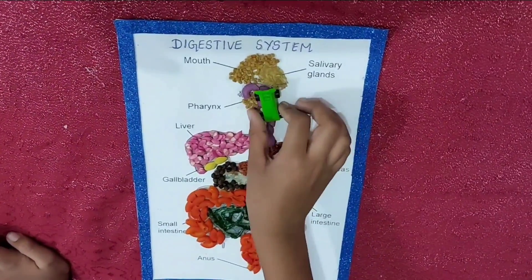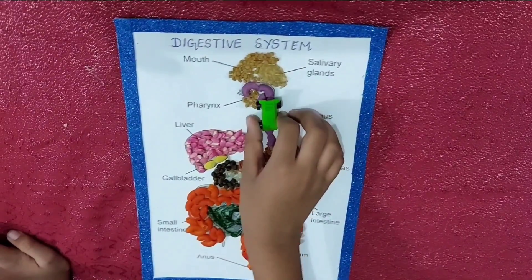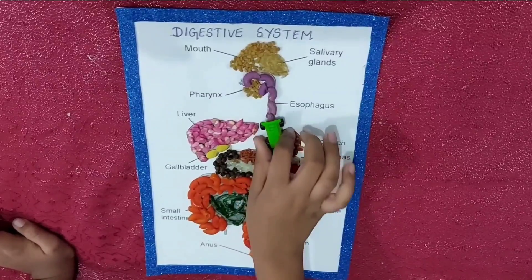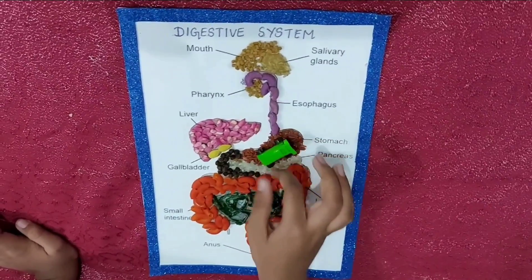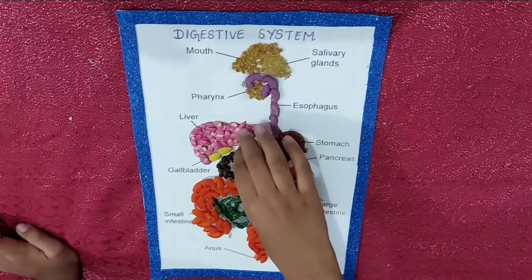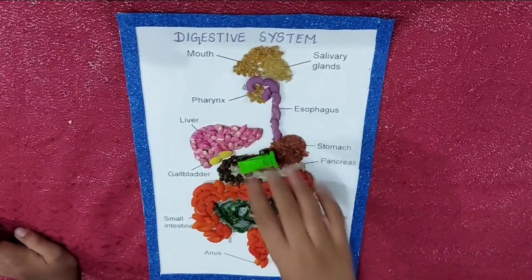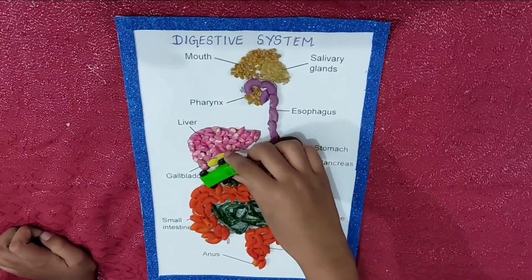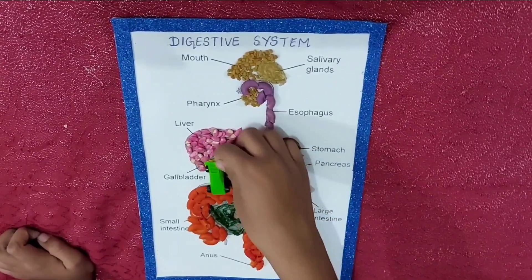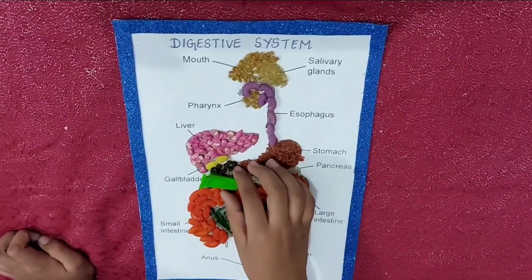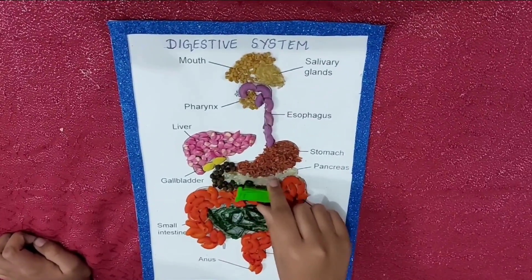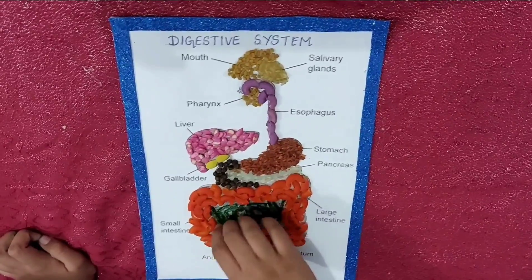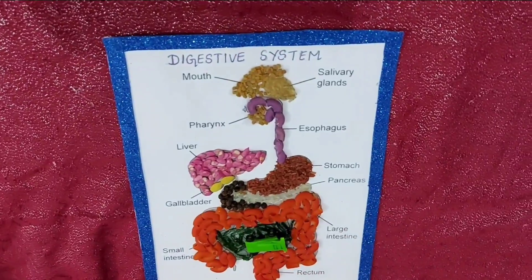The small pieces of food travel to the stomach through the food pipe. In the stomach, the food mixes with digestive juices to form a paste. The food then goes from the stomach into the small intestine, where digestive juices help to digest the food.